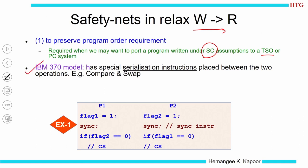For the IBM 370 model, we have a special serialization instruction available to do this. If the programmer wants to maintain the W followed by R order, then the programmer has to insert this synchronization instruction between these two — the write and the read. Between the write and the read, if I want to maintain the order, I need to insert this sync instruction. The semantics of this is: if a sync instruction is there, everything before that is completed before it starts the next instruction.